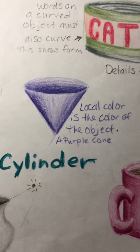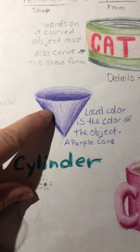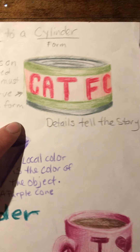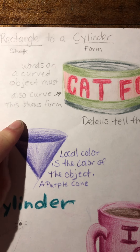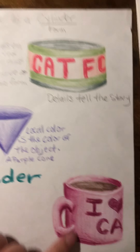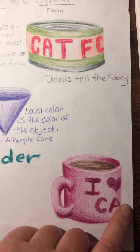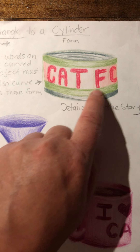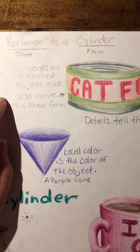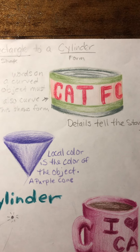Local color, when you're adding colored pencils, is the color of the object — so the whole object is purple. Here I've got a cone included with my cylinders because when we draw the cone, we also use an ellipse and the shading can be similar as well. Don't be afraid to put details in; details help tell the story of your picture. If you have words on your cylinder, whether it's a Pepsi can, Coke can, cat food, or coffee mug, they need to curve to go around the object or it will end up flattening it back out.